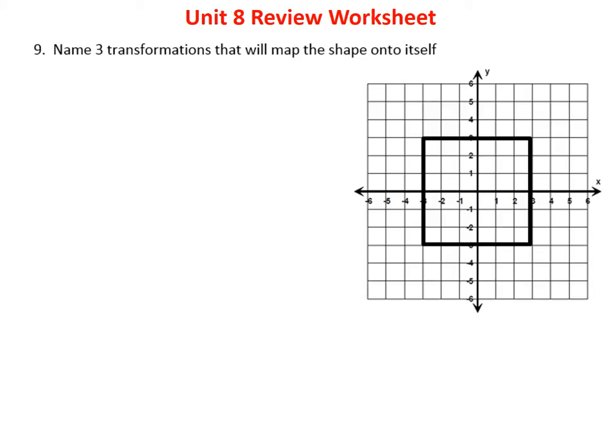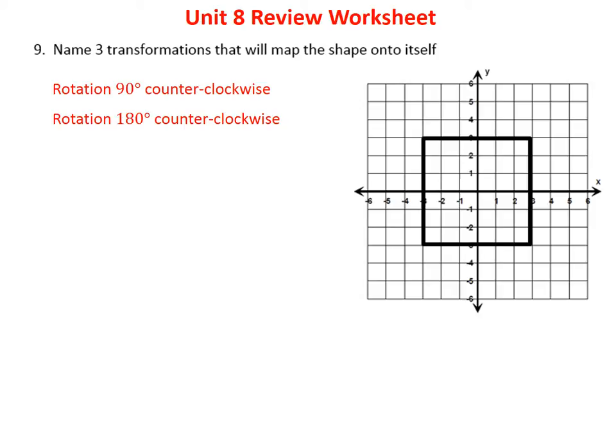Problem nine asks us to name three transformations that will map the shape onto itself. There are many here because this is a square. A square has lots of ways you can turn, reflect, and move it to get the same thing. First, I can do a rotation — rotating 90 degrees still gives a square, and again at 180 degrees, 270 degrees, or all the way to 360 degrees.